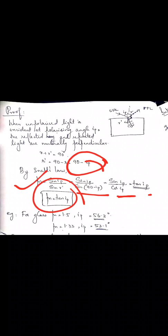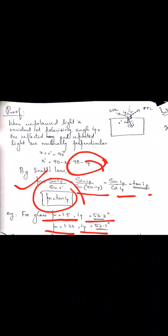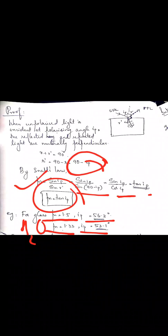For glass, when mu = 1.5, its polarizing angle is 56.3°. For water, mu = 1.33 and its polarizing angle is 53.1°. So, I hope the first method for the production of plane polarized light — polarization by reflection — is clear to all of you. When light is incident on a material at its polarizing angle, the reflected beam will be completely plane polarized with vibrations perpendicular to the plane of incidence, and we can derive the refractive index using mu = tan(ip). I hope this session is clear to all of you. If you have any doubts, please do contact. Thank you.